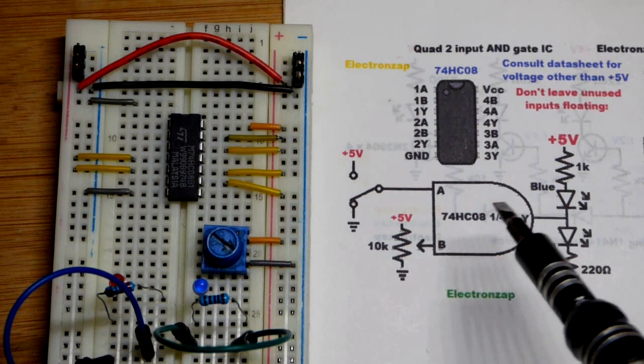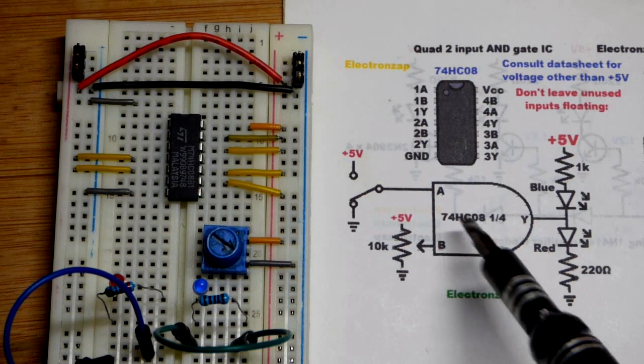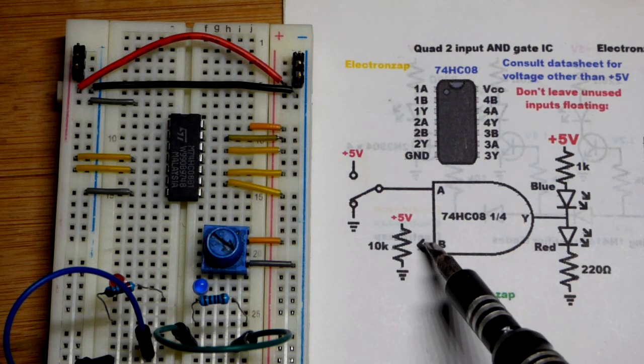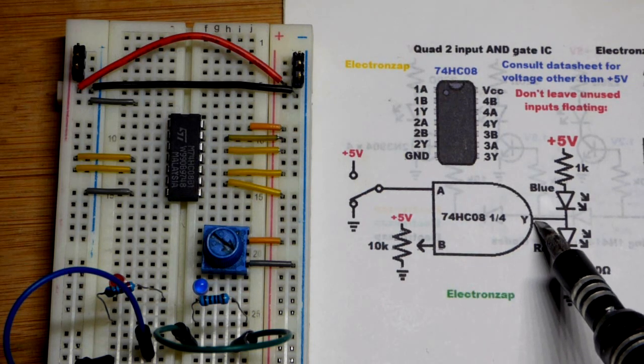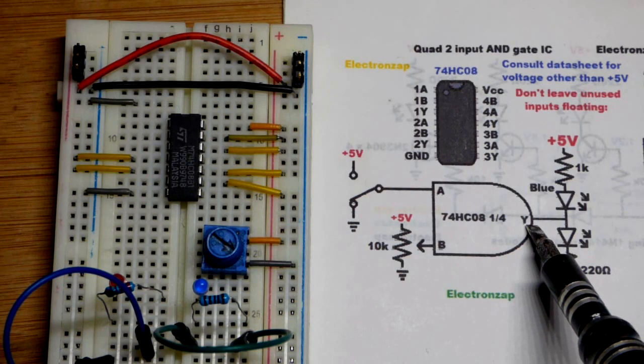A better version would probably be the Schmidt trigger version of the AND gate. This one is not the Schmidt trigger version. So if we get a middle ground voltage, it can be indefinite what we'll have at the output right there.